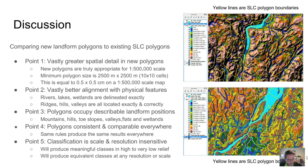At this point, we have just begun to evaluate the new landform class polygons and to compare them to the existing SLC polygons. Already we can make the following observations. Point one: the new polygons offer vastly greater spatial detail than the SLC polygons. Point two: the new polygons offer vastly improved alignment with observable physical and hydrological features. Point three: the new polygons occupy describable and interpretable positions in the landscape. Point four: the new polygons are consistent and comparable everywhere. And point five: the new classification is relatively insensitive to the scale of the landscapes it is classifying or to the resolution of the DEM used to apply the classification.